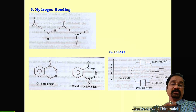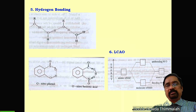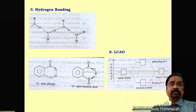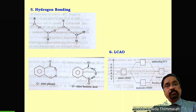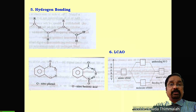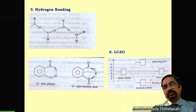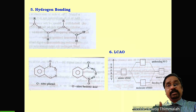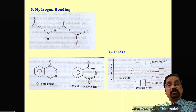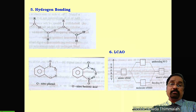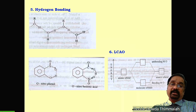The next topic is hydrogen bonding — very simple. The weak force of attraction that exists between the hydrogen atom of one molecule and the more electronegative atom of a neighboring molecule is called hydrogen bonding. There are two types: intermolecular hydrogen bonding, which occurs between molecules (as in alcohols), and intramolecular hydrogen bonding, which occurs within the molecule.